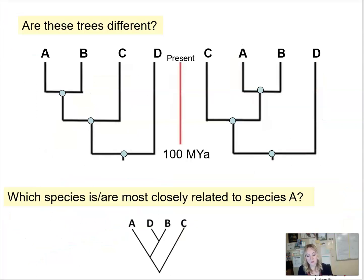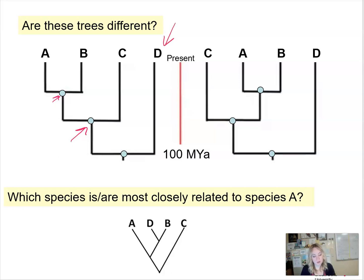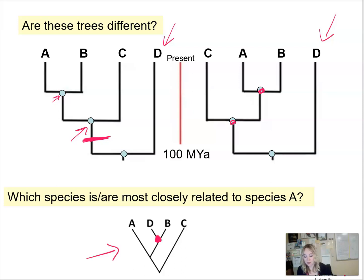Here's another example: if you look at two trees, can you tell if they are different? Again, look at the common ancestor between organisms. We have A and B sharing a common ancestor, and then A, B, and C sharing a common ancestor. These trees are actually exactly the same. Visualize cutting the node and rotating it — you get the same thing.